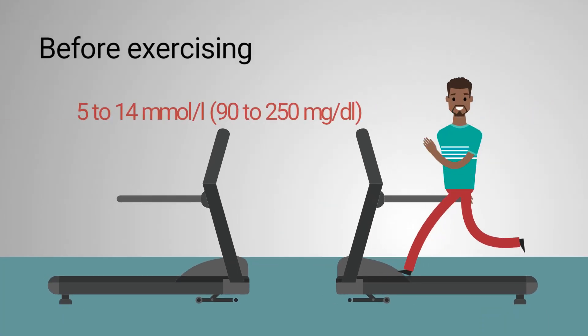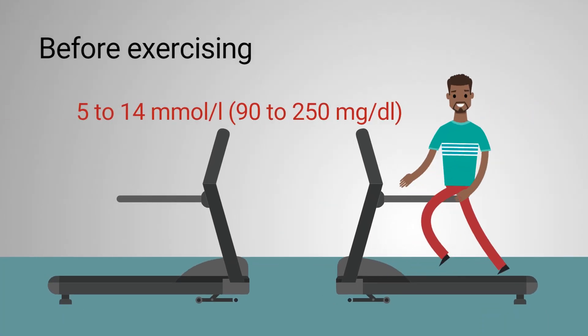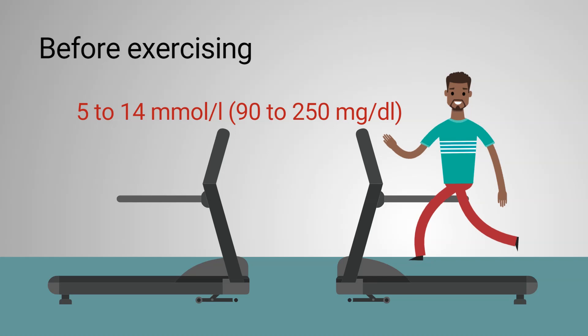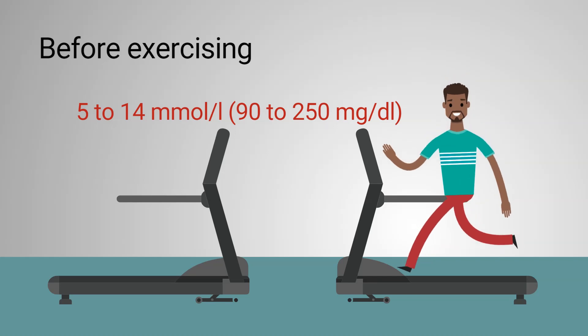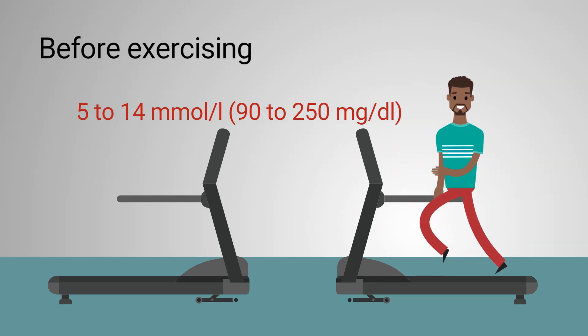Before exercising, blood glucose levels should be 5 to 14 millimoles per liter or 90 to 250 milligrams per deciliter.